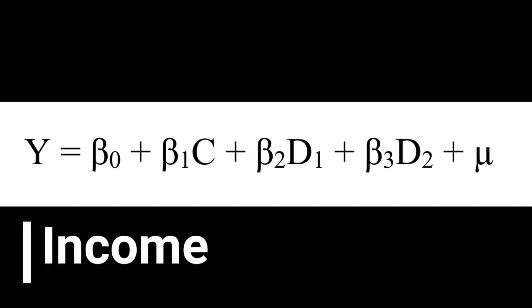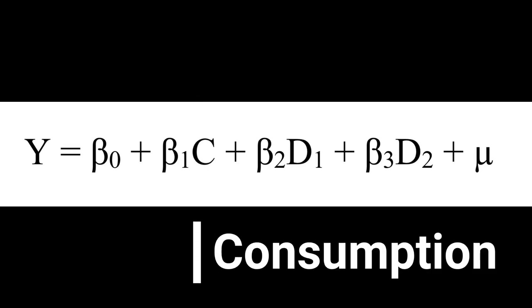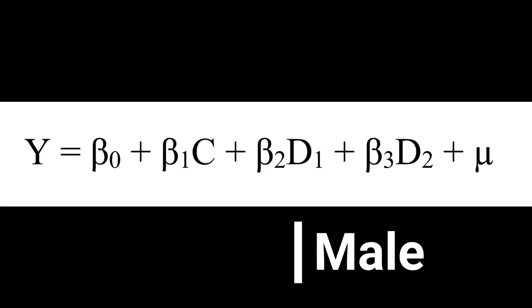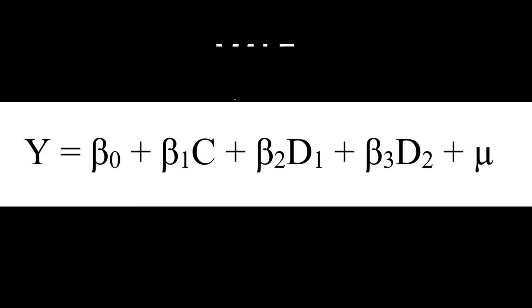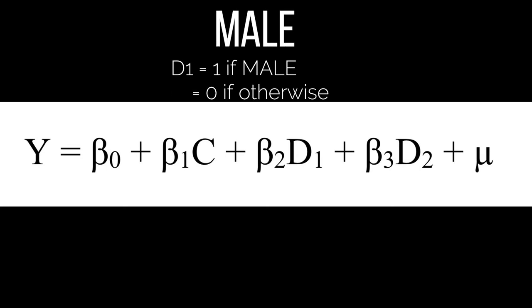Here Y is the income, C is the consumption, D₁ is the dummy variable male and D₂ is the dummy variable female. So for the first dummy variable D₁ which is male, we assign the values 0 and 1. D₁ is 1 if the person is male and 0 if otherwise.